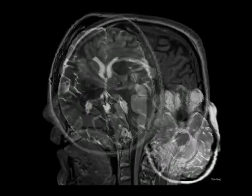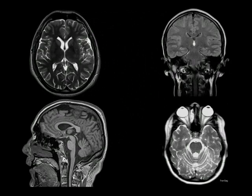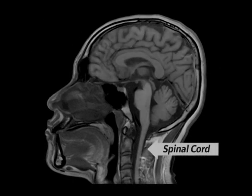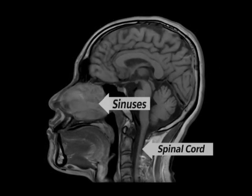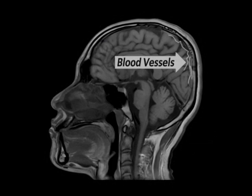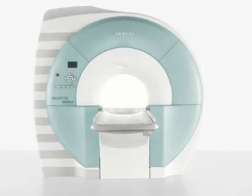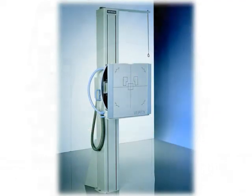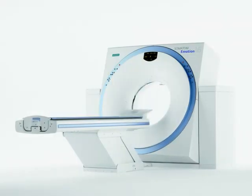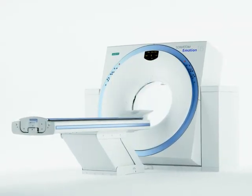These are MR images of the brain. They're astoundingly clear and detailed. In addition to the brain, we can see the spinal cord, sinuses, teeth, and even the blood vessels. Just what makes MRI so different from other medical imaging techniques, such as conventional x-rays and computed tomography, known as CT scans? And under what circumstances is MRI the preferred imaging technique?